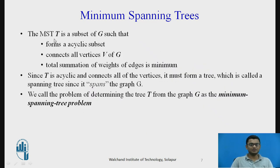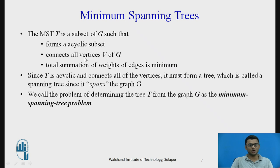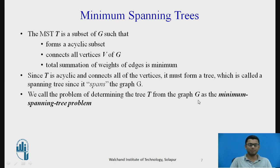The minimum spanning tree T of a graph G is a subset of G such that it forms an acyclic subset — no cycle of edges should be formed. It connects all vertices, meaning all vertices must be included, and the total sum of the weights must be minimum. We call the problem of determining tree T from graph G the minimum spanning tree problem.